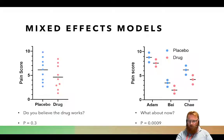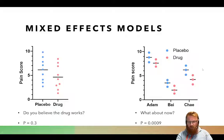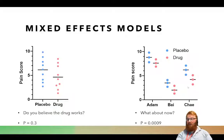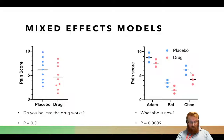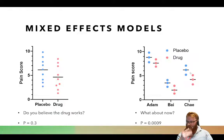You can see the problem: what is N here? Is N three because there were three people? Is it nine because we tested nine times? Is it 18 because there are 18 total samples? Or is it somewhere in between? The answer is actually it's somewhere in between.